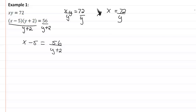We'll substitute in the 72 over y into our equation here. So now we have 72 over y minus 5 equals 56 over y plus 2.